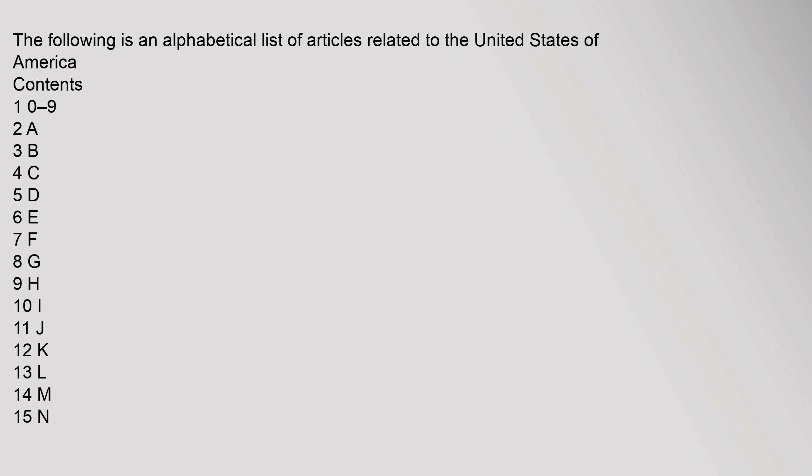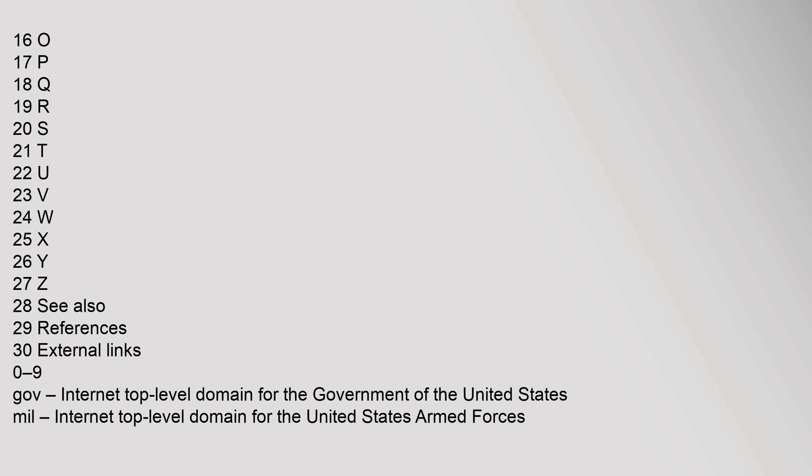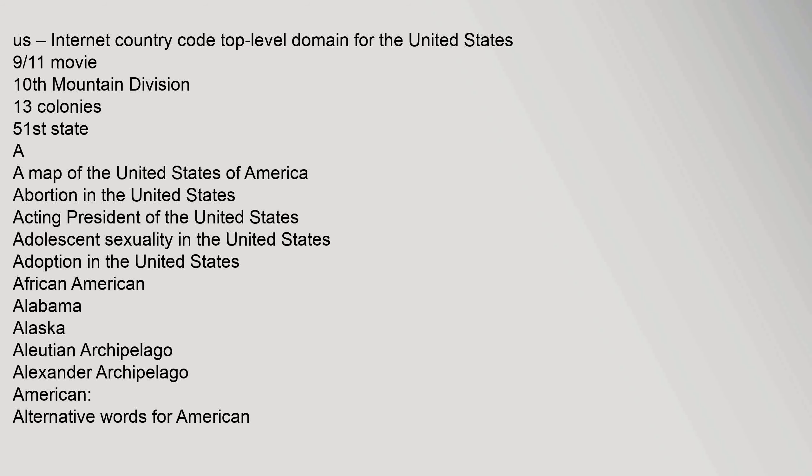Contents: 1 through 0-9, 2 A, 3 B, 4 C, 5 D, 6 E, 7 F, 8 G, 9 H, 10 I, 11 J, 12 K, 13 L, 14 M, 15 N, 16 O, 17 P, 18 Q, 19 R, 20 S, 21 T, 22 U, 23 V, 24 W, 25 X, 26 Y, 27 Z, 28 See also, 29 References, 30 External links. 0-9: .gov Internet Top Level Domain for the Government of the United States. .mil Internet Top Level Domain for the United States Armed Forces. .us Internet Country Code Top Level Domain for the United States. 9-11 Movie, 10th Mountain Division, 13 Colonies, 51st State.